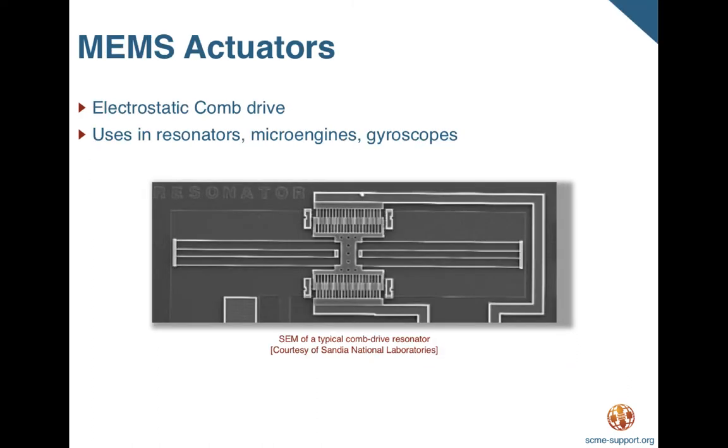An example of a micro actuator is the electrostatic comb drive. Comb drives are used in many MEMS applications such as resonators, micro engines and gyroscopes. The force generated is low, usually less than 50 micronewtons. However, these devices are predictable and reliable, making them usable for a variety of micro applications.